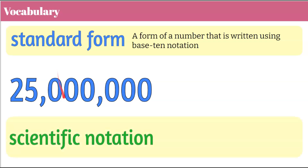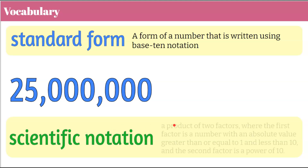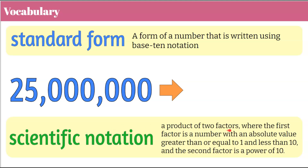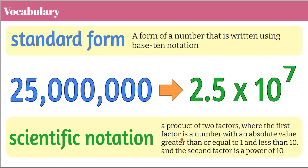We can also write a number in scientific notation. Scientific notation is a product of two factors where the first factor is a number with an absolute value greater than or equal to 1 and less than 10, and the second factor is a power of 10. So when we take 25 million from standard form and write it in scientific notation, the first factor is between 1 and 10, and it's multiplied by a power of 10.